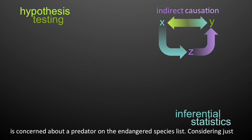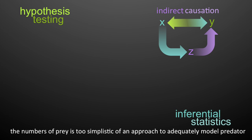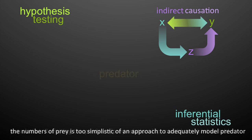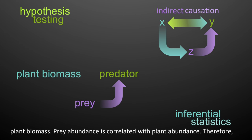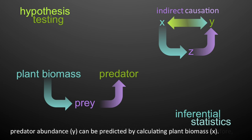Suppose a researcher is concerned about the predator on an endangered species list. Considering the number of prey is too simplistic an approach to adequately model predator population. Revisiting the predator-prey relationship, consider a third variable — plant biomass. Prey abundance is correlated with plant abundance, therefore the predator abundance can be predicted by calculating plant biomass.